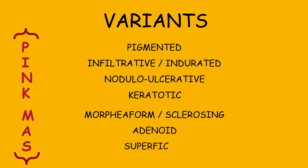Additional variants include adenoid and superficial variety. To remember the variants, you can keep the mnemonic PINK MASS in your mind to recall all these variants later on.